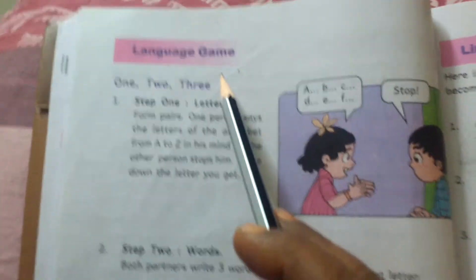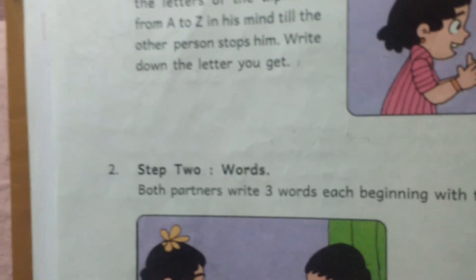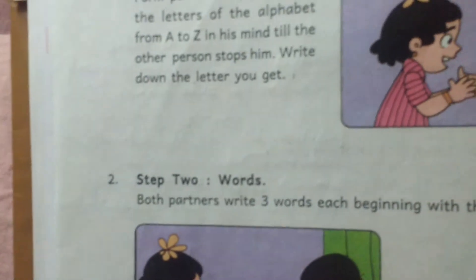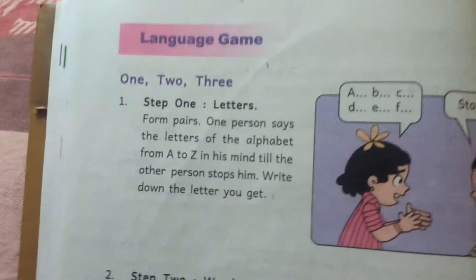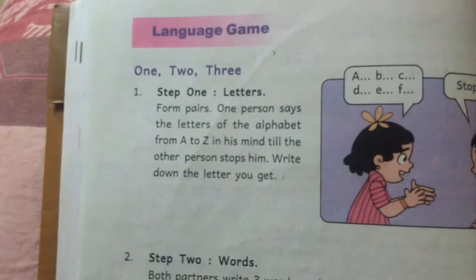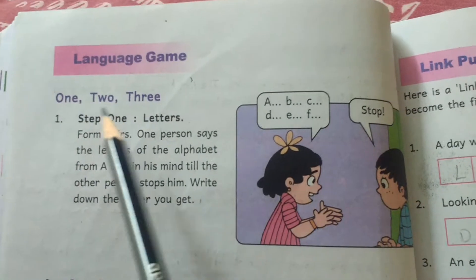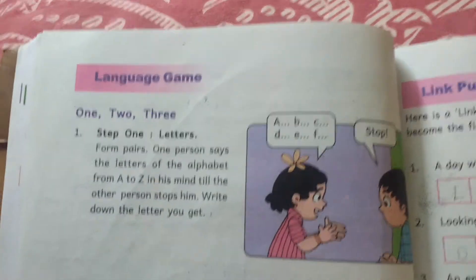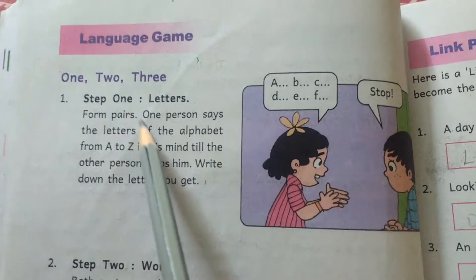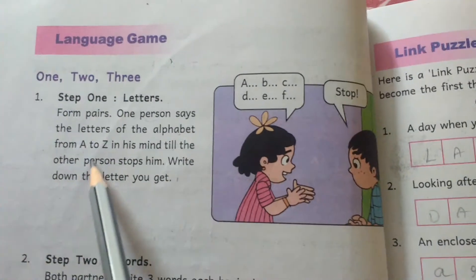Language game. Language game — Step 1: Letters form pairs. One person says the letters of the alphabet from A to Z in their mind until the other person stops them.